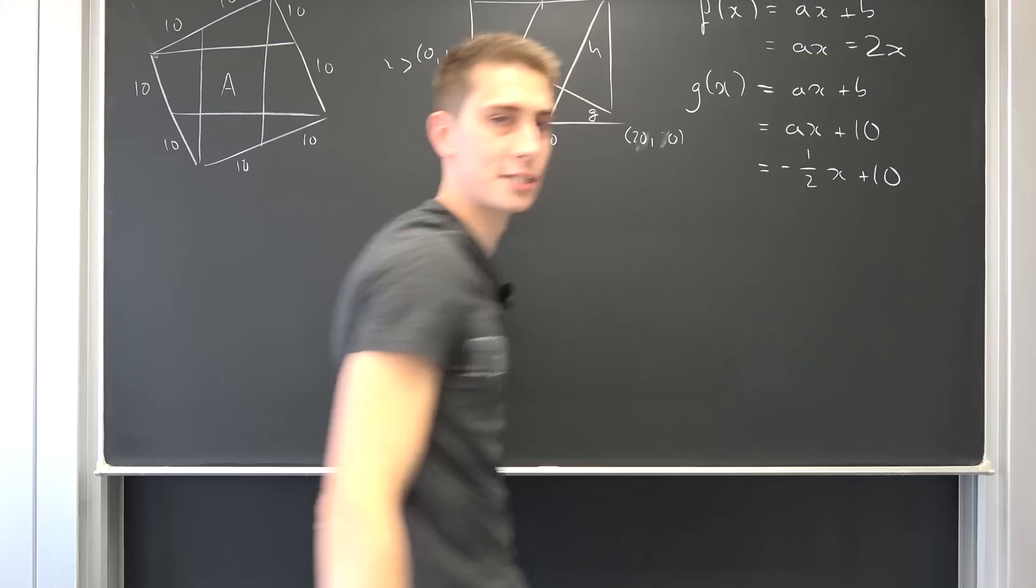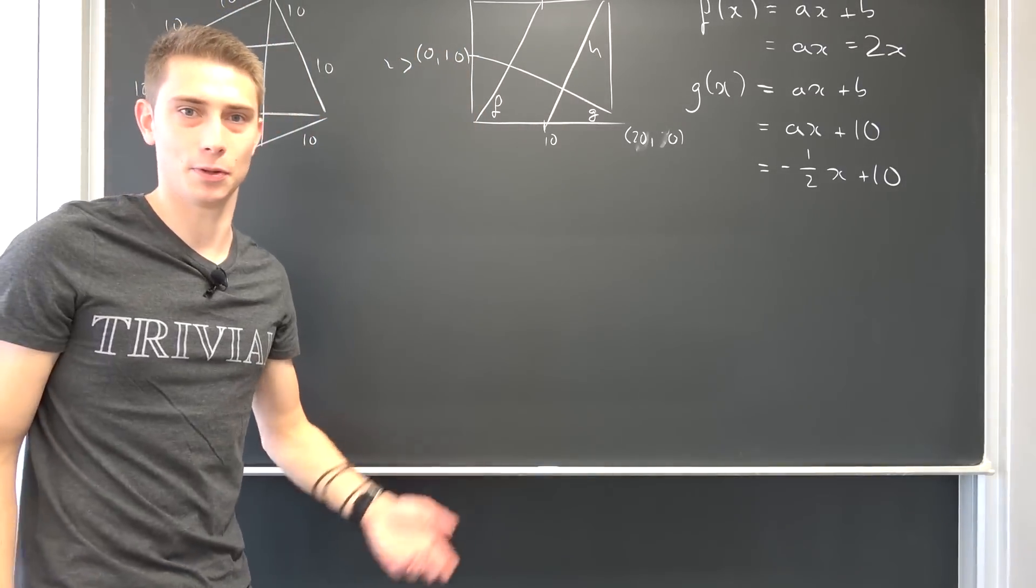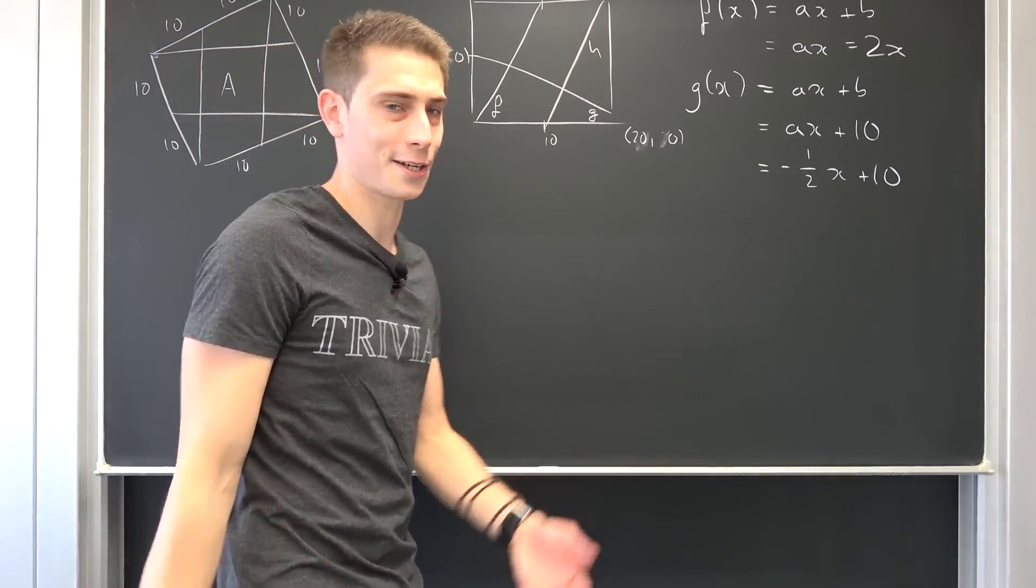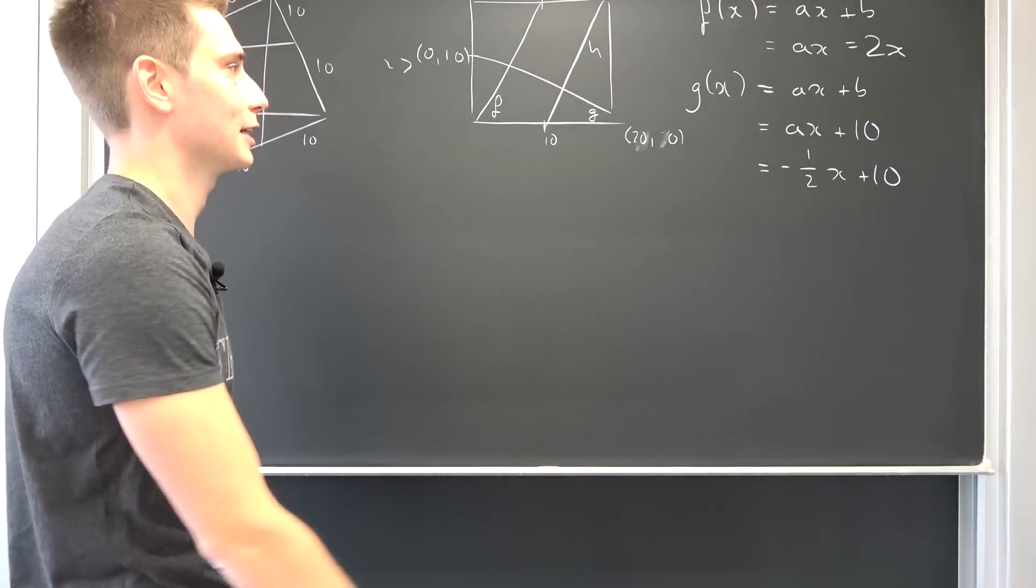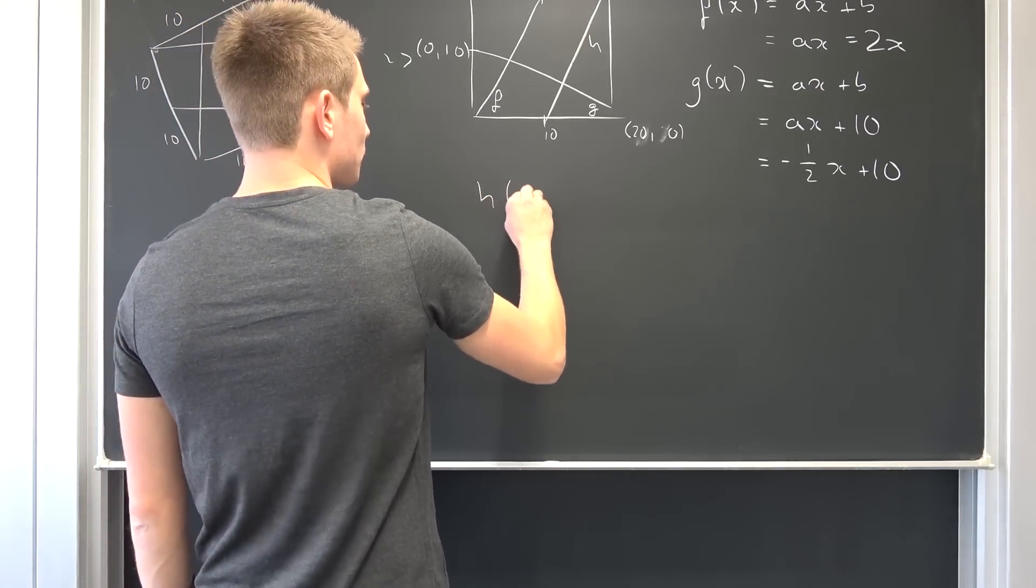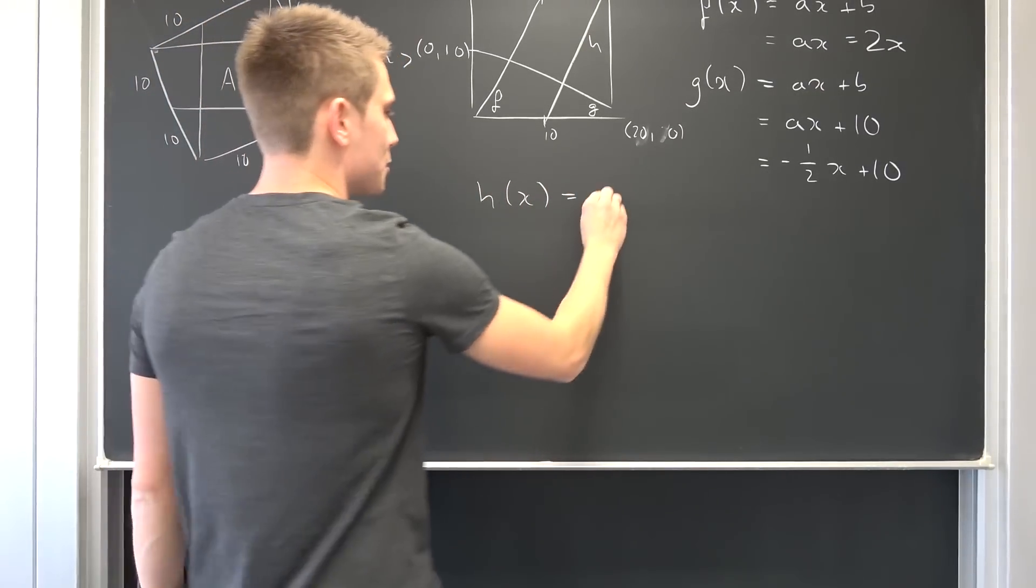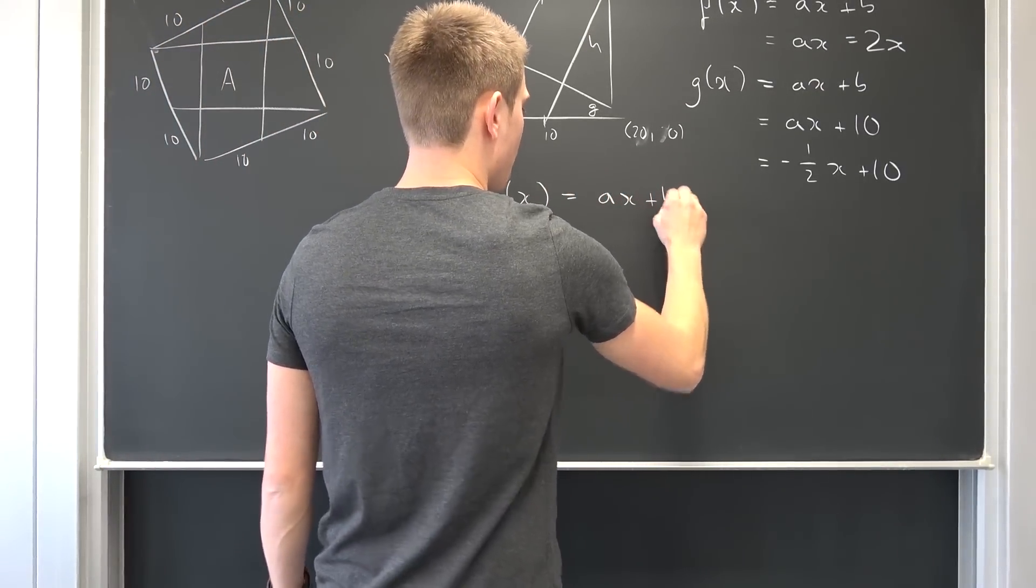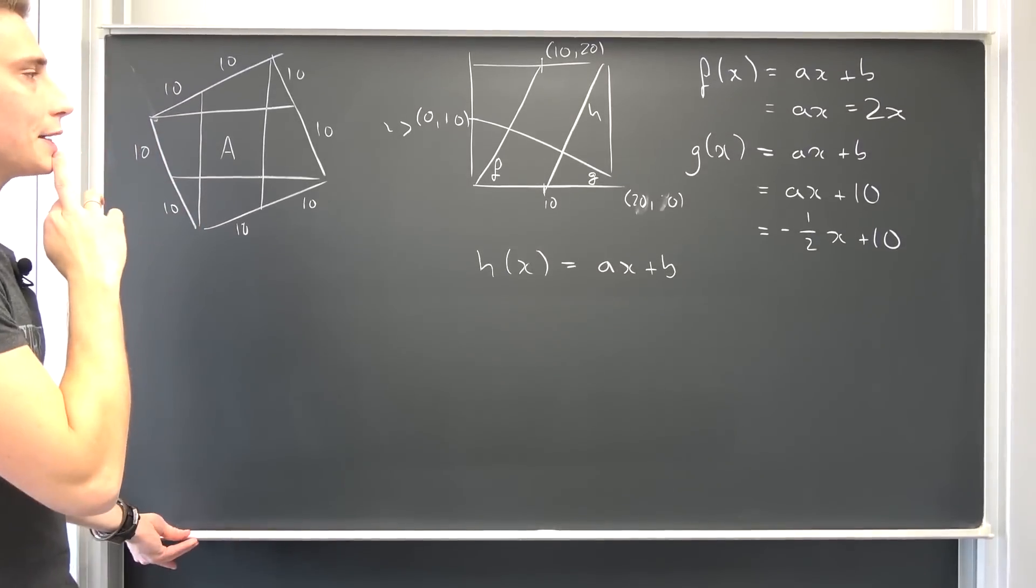It's just simple third class calculus. It's pretty trivial. What about our h? h of x is also of the form ax plus b. Now what is our y intercept?